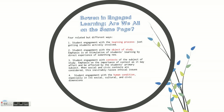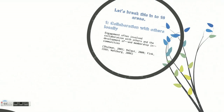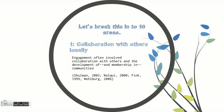When social and civic contexts are considered, this inevitably raises ethical issues. Or four: student engagement with the human condition, especially in its social, cultural, and civic dimensions. Now, that is a very good place to start, but for this presentation we're going to break engaged learning into ten different areas. So let's start with Area 1: Collaboration with others locally. In this case, engagement often involves collaboration with others and the development of or membership in communities. This could be inside of the classroom, a group project, or working with a specific local entity to get a project completed. All of those would be considered different types of engaged learning.